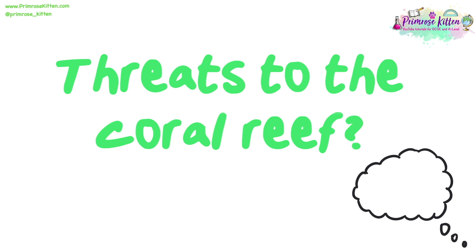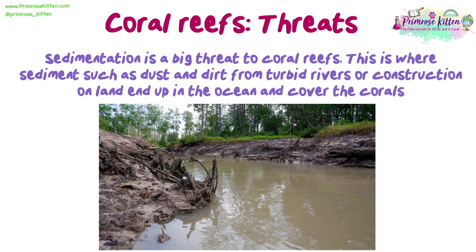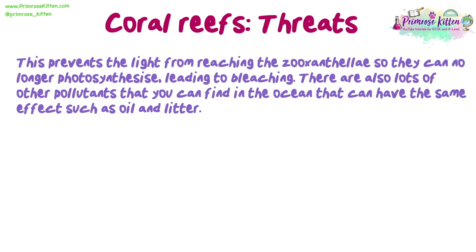What are the other threats to the coral reef? Sedimentation is a big threat. This is where sediments such as dust and dirt from turbid rivers or construction on land ends up in the ocean and covers the corals. This prevents the light from reaching the zooxanthellae, so they can no longer photosynthesise, leading to bleaching. There are lots of other pollutants that you can find in the ocean that have the same effect, such as oil and litter.